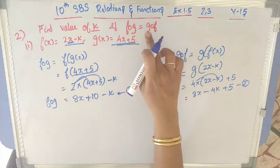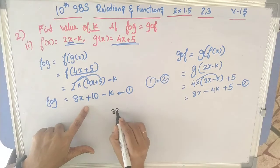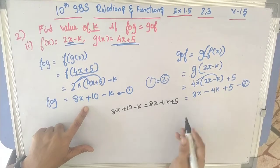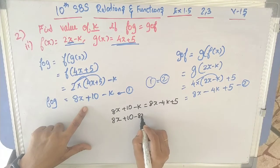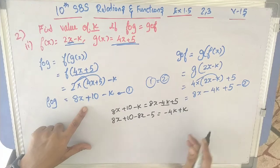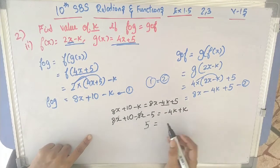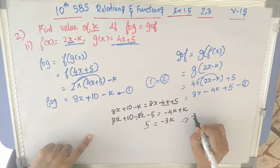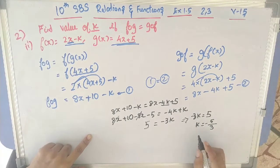Since equation 1 = equation 2: 8x + 10 − k = 8x − 4k + 5. Taking k to one side: 10 − 5 = −4k + k, so 5 = −3k, therefore k = −5/3.